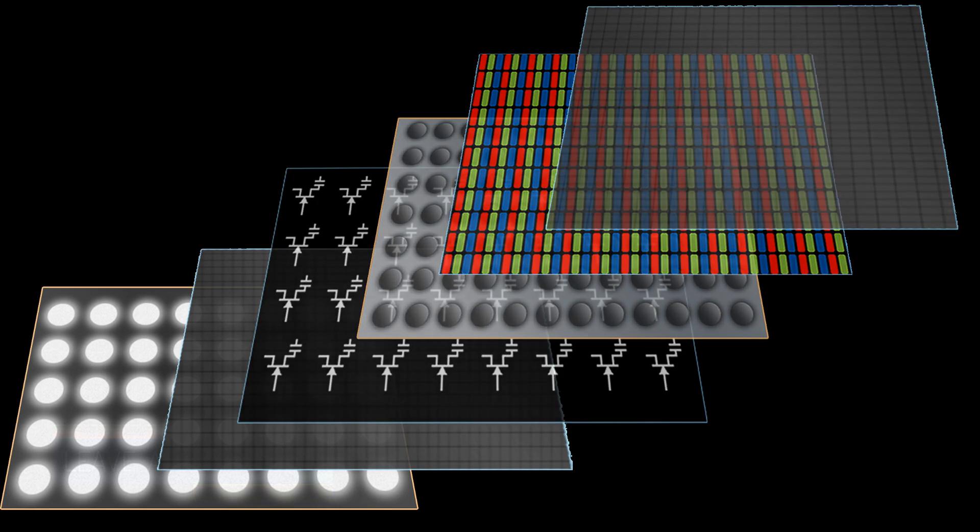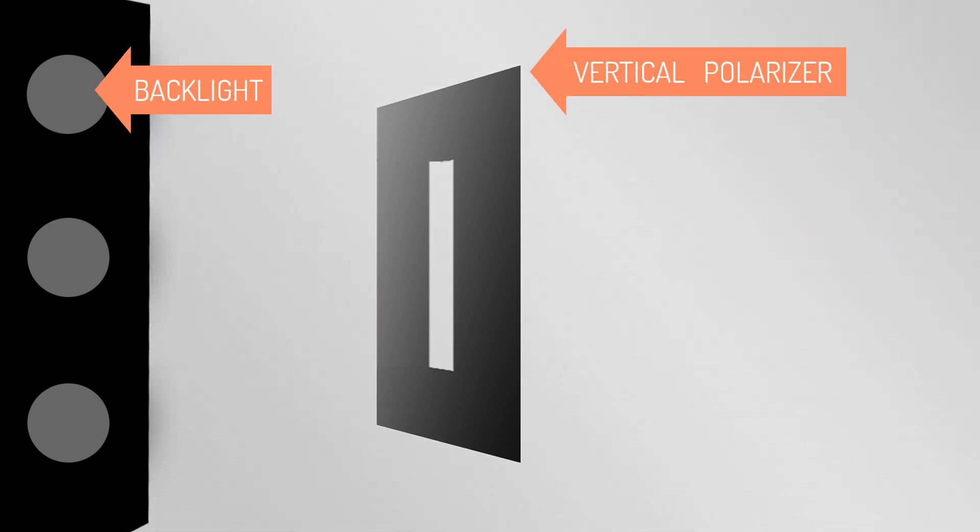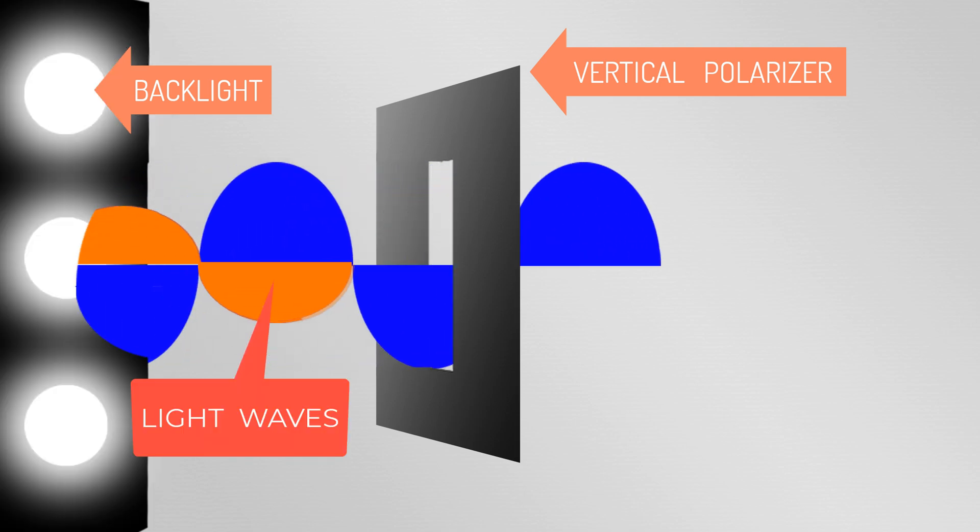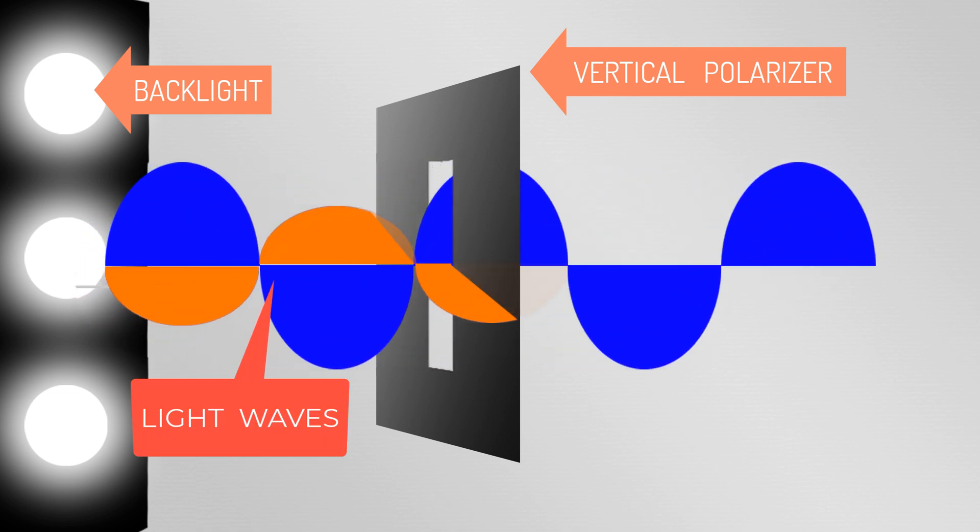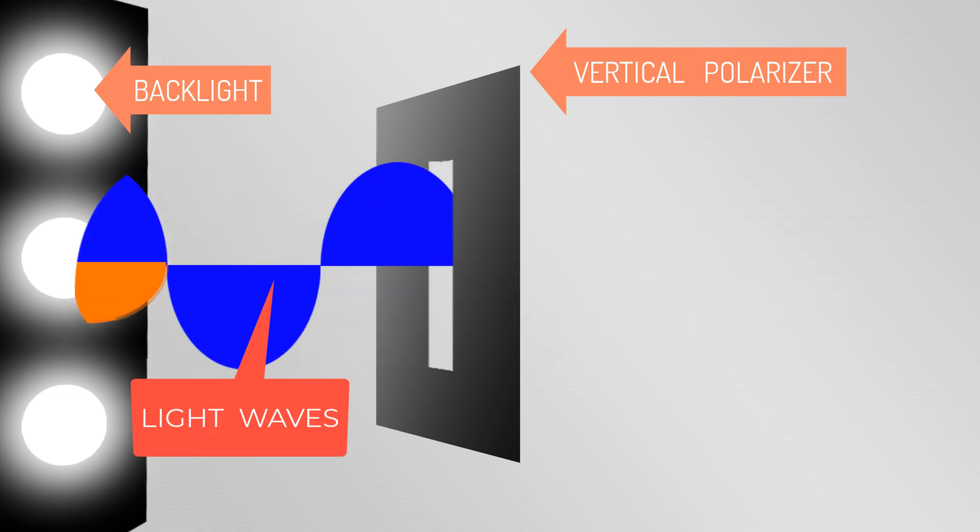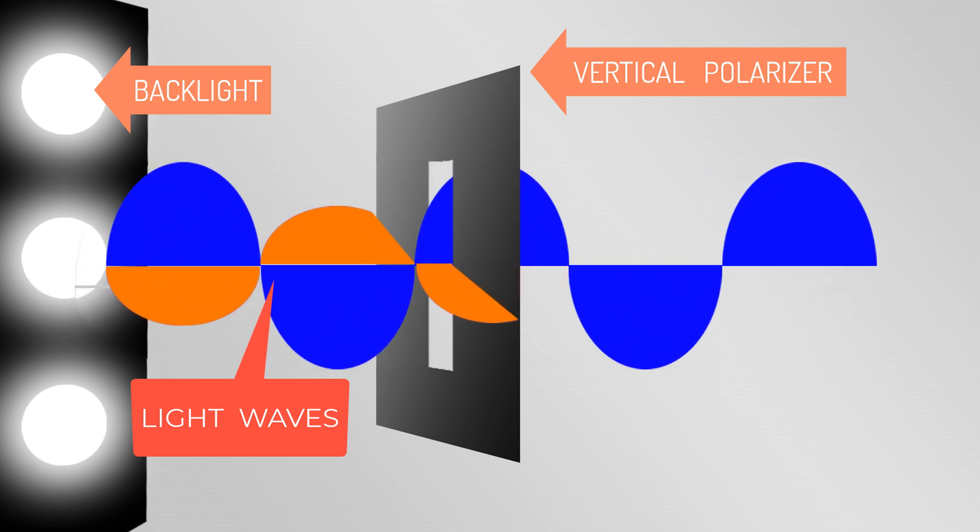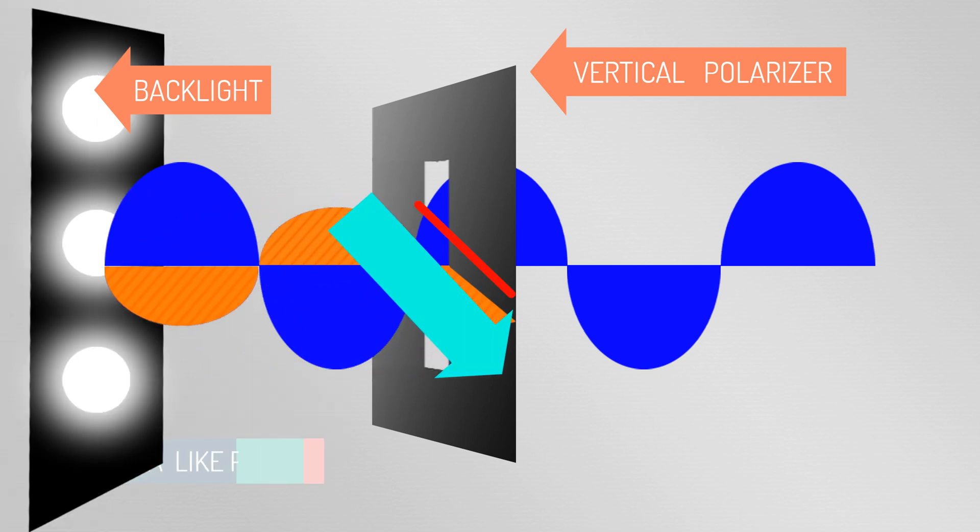Now we will see what is the role of vertical polarizer in LCD display. This is backlight and this is vertical polarizer. When the backlight is on, the light will fall in different angular paths onto the bottom surface of the vertical polarizer. In this situation, the light waves coming along the vertical paths can pass through the vertical gap of the polarizer. And the light waves coming from the horizontal angle will be blocked by the vertical polarizer.